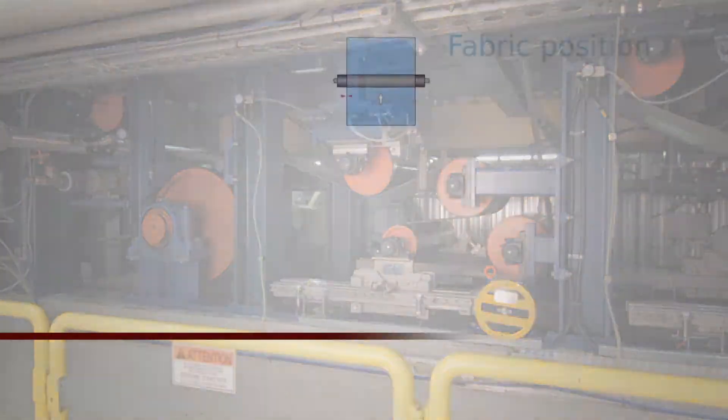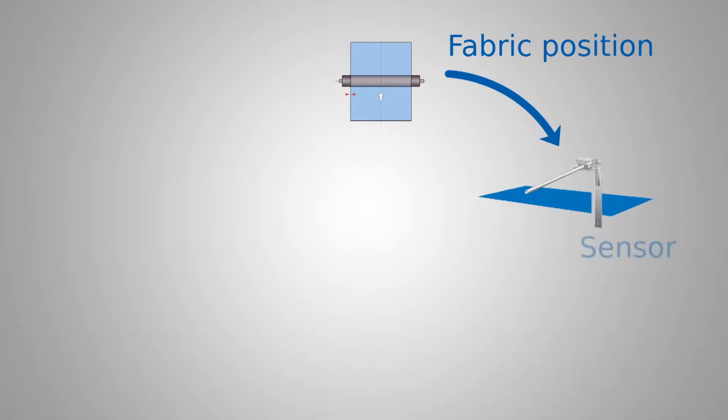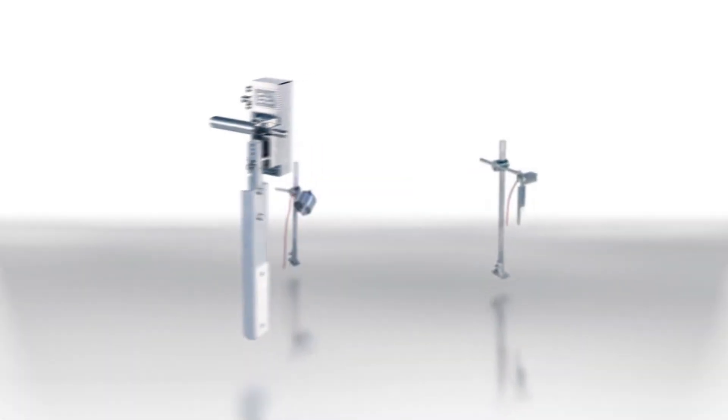The L-Guide product group from Erhard & Leimer provides all the components needed to control the fabric position. High precision sensors identify the fabric position.